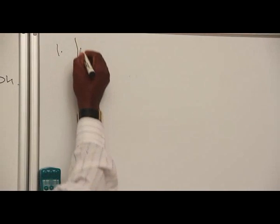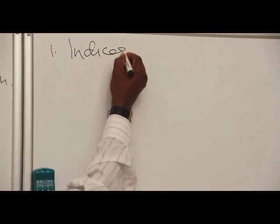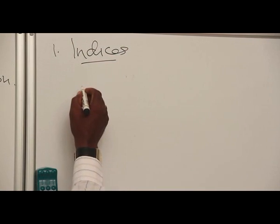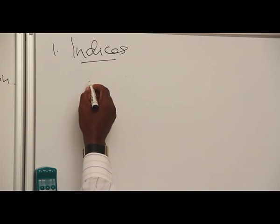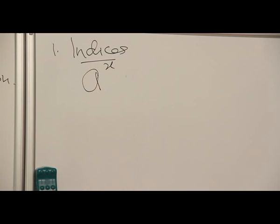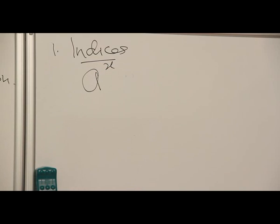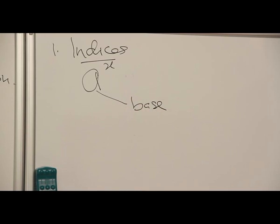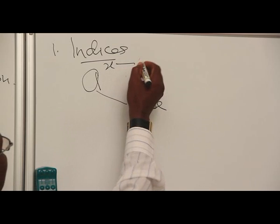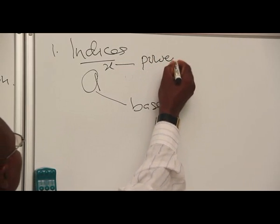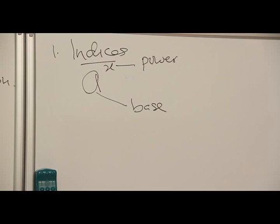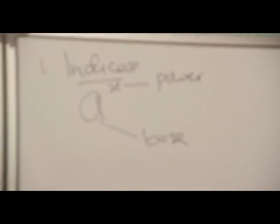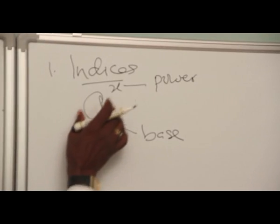Indices: A number is said to be in index form if it is written as a raised to power s. The a is referred to as the base, the s is the power. This is a raised to power s. This is an index form.